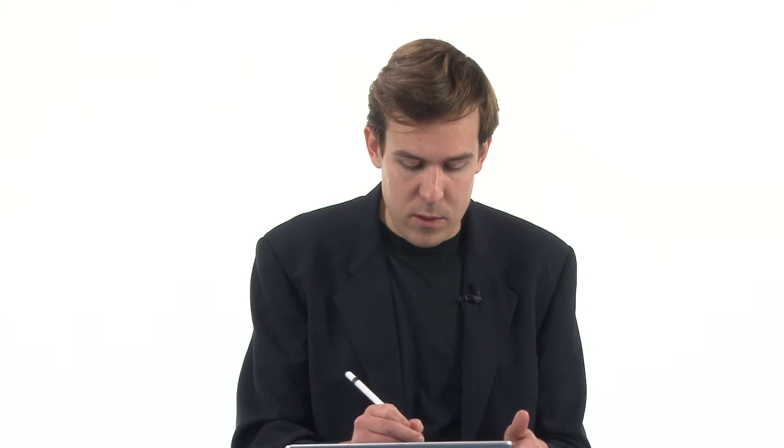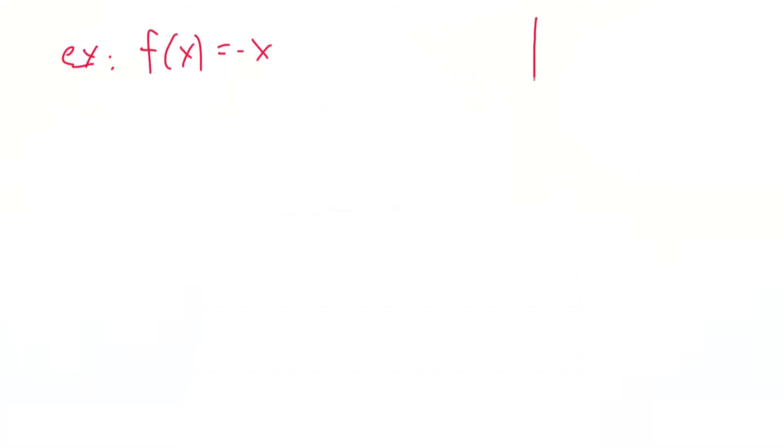Let's look at another example. This one's a bit simpler. F(x) equals negative x. This is I think a very reasonable one to plot. It's just a line with slope negative one. So my picture is like this.